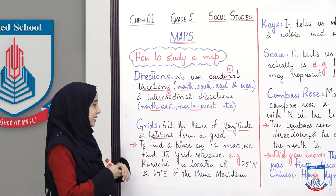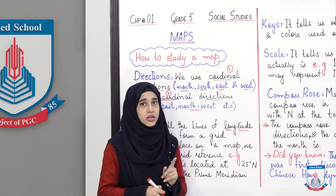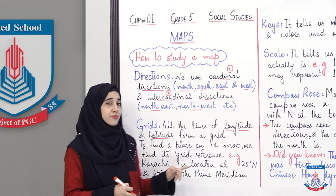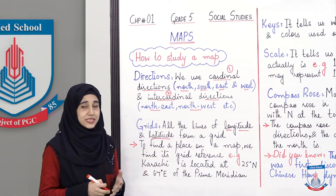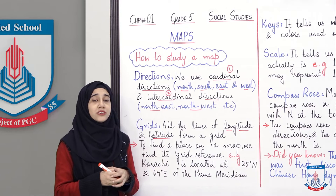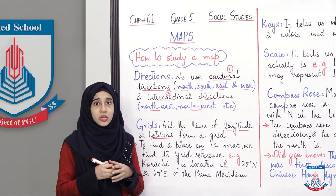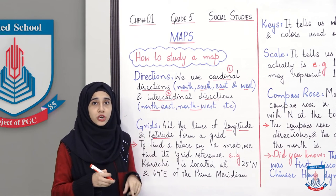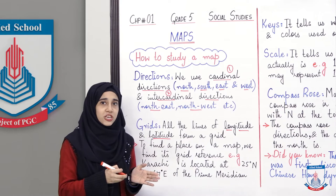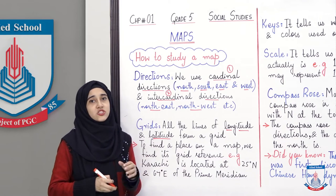Grid reference talash karne ka kya matlab hai? For example, Karachi is located at 25 degree north of the equator — equator, aapko pata hai, line crossing through the middle of the earth — and 67 degree east of the prime meridian. Toh agar aapne map par koi location talash karni hai, toh aap uska grid reference dhoondhte ho, phir aapko exactly pata lagta hai ke map par woh jaga kidhar hai. Is liye uska grid reference diya jata hai.